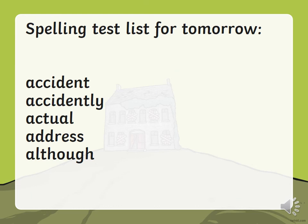Here is your spelling list for tomorrow's spelling test: accident, accidentally, actual, address, and although. Those are the five words I will be testing you on tomorrow. Hopefully you take some time today to practice these — take around ten minutes, just write them out as many times as you can. The more you write it, the more you're likely to remember it. Good luck and I hope you've enjoyed today's lesson. I'll speak to you tomorrow. Make sure you send over any work to the year four Gmail — we will be doing shout-out videos. Take photos and send over all your lovely work because we really want to see it. Bye, guys!